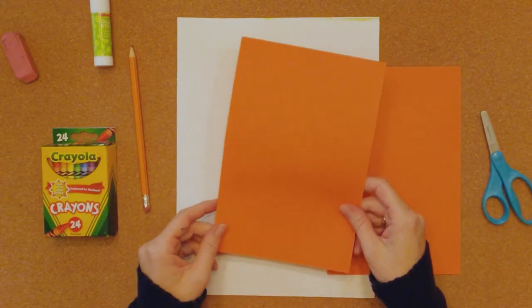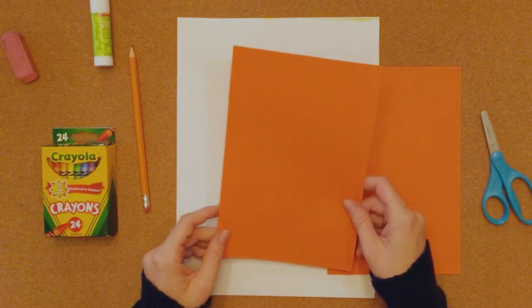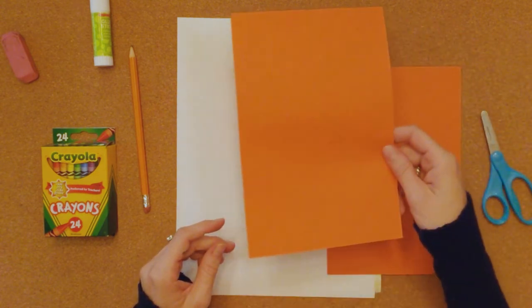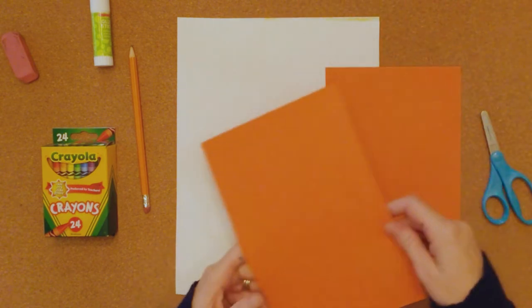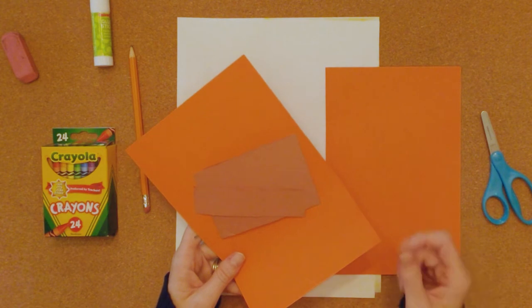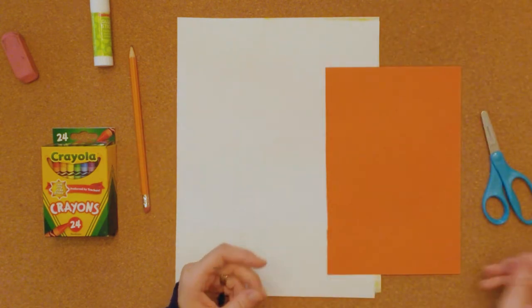And we're going to take this half of paper, we're going to put it back into our bag so that we have orange for our next project. So anytime we have scrap colored paper, let's keep it because we can use it later.